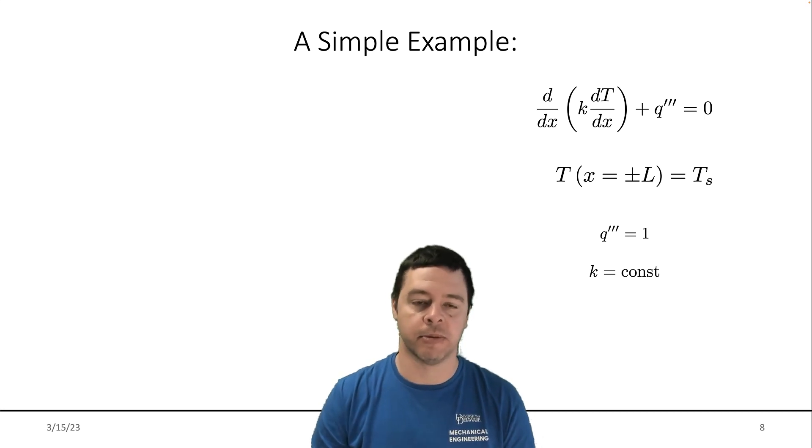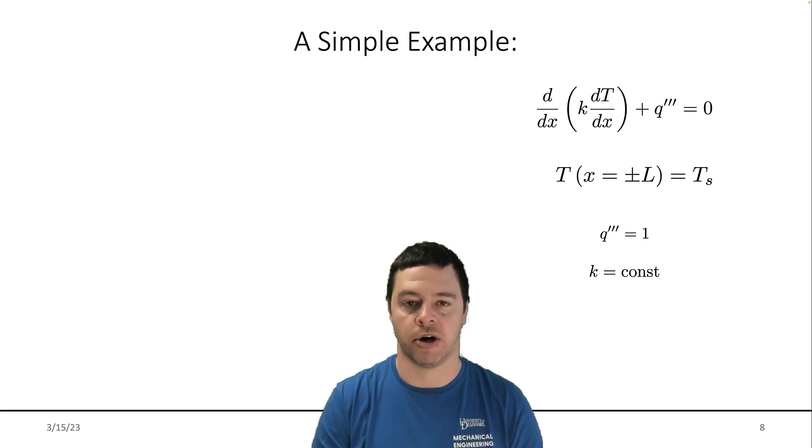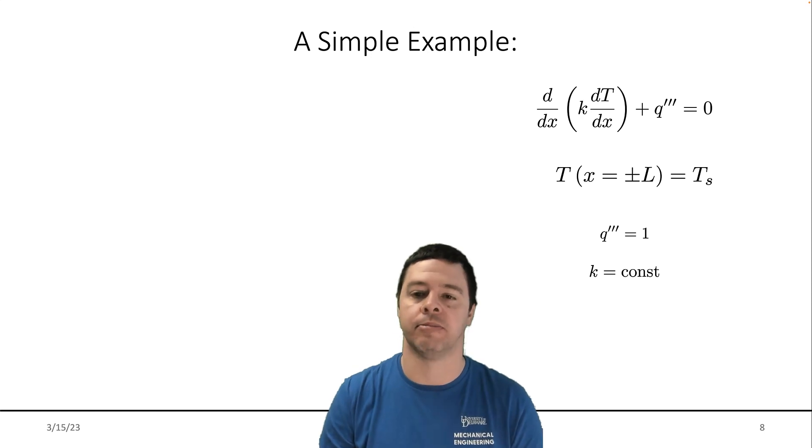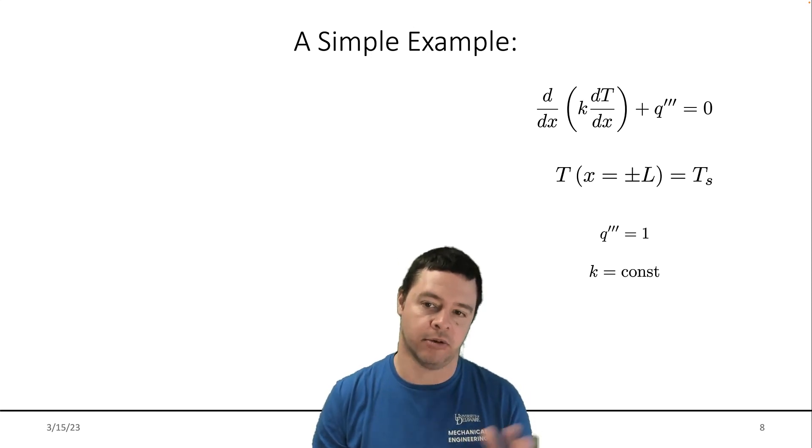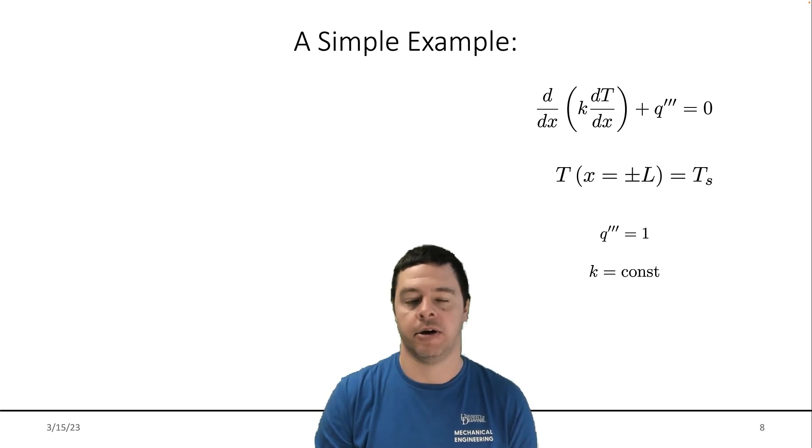So let's do a simple example where we are going to solve for internal heat generation in a one-dimensional slab where the temperature on the two sides of the slab are specified. Let's call that temperature T sub S, the surface temperature. To make the problem particularly simple, I'll make it symmetric so that the two sides of the surface are at X equals minus L and X equals plus L. We'll use an internal heat generation value of one and a constant value of the thermal conductivity.